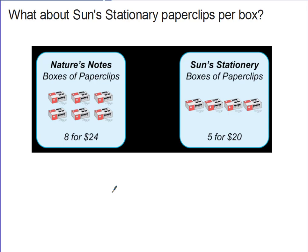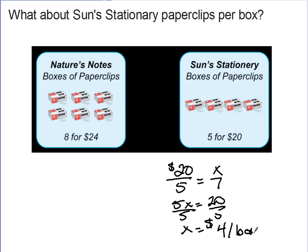So now what about Sun's stationary paperclips? We'll do the same thing there. We're going to come over here and it says that Sun's are five boxes for $20. So we do the same thing. Price, $20 divided by quantity. And we're still looking for how much for one. So we do the same thing. And we end up with 5x is equal to 20. Divide both sides by five. And x is equal to four. Or in this case, $4 per box.